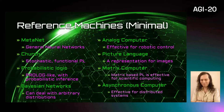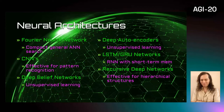Analog computers are intended for robotic control applications. Picture language can represent images. Matrix programming can be used for scientific computing applications, and asynchronous computers can be handy for dealing with distributed and interactive systems.